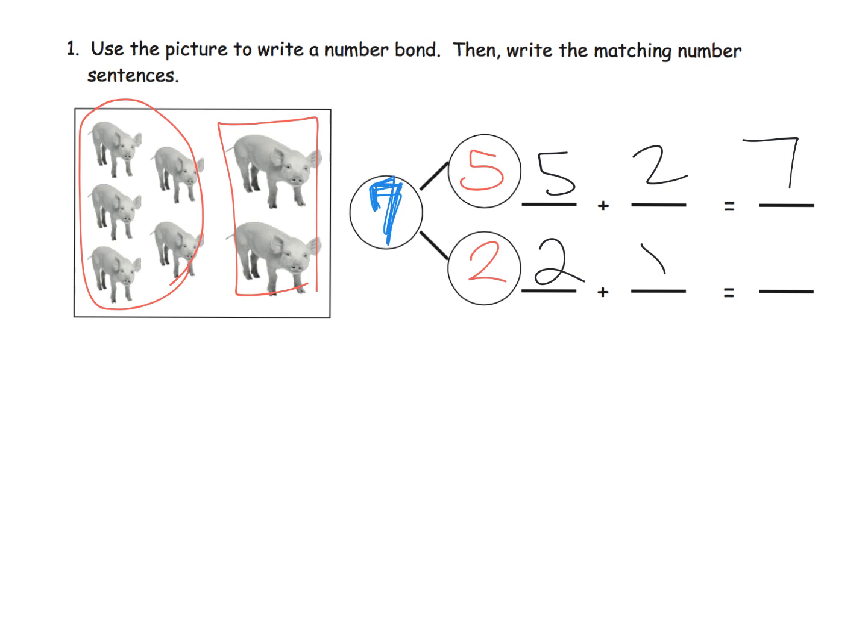We could write two plus five equals seven. And the reason for that is the commutative property.